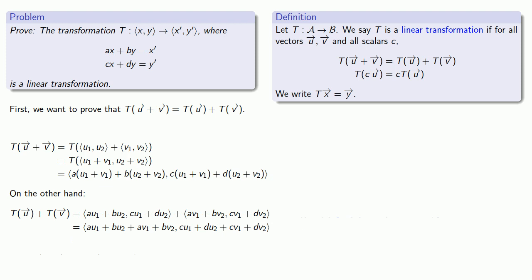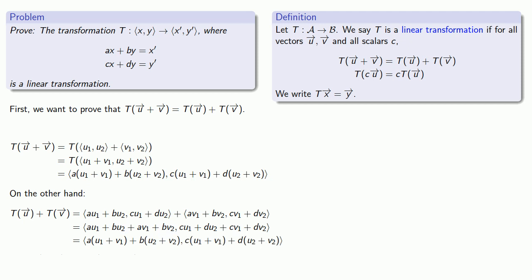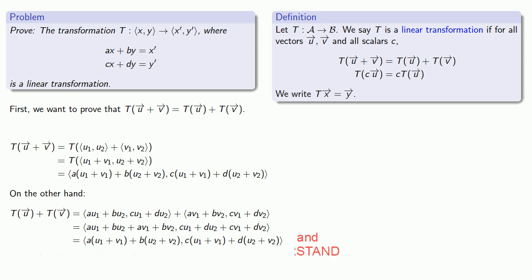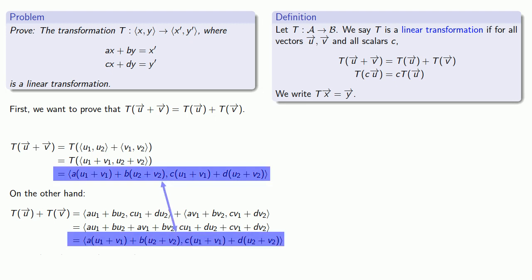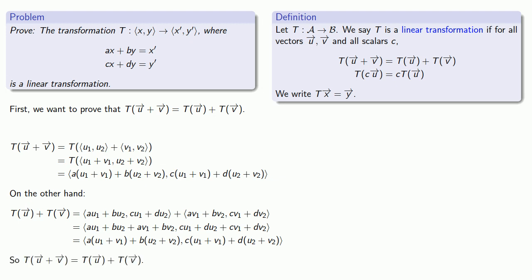We can factor a term of a out of both of these, and factor a term of b out of both of these, so our first component can be written this way. And likewise, our second component can be written as c times something plus d times something. But this is exactly what we got for the transformation applied to the vector sum u plus v. And so the transformation applied to the vector sum is the sum of the transformation applied to the vectors.